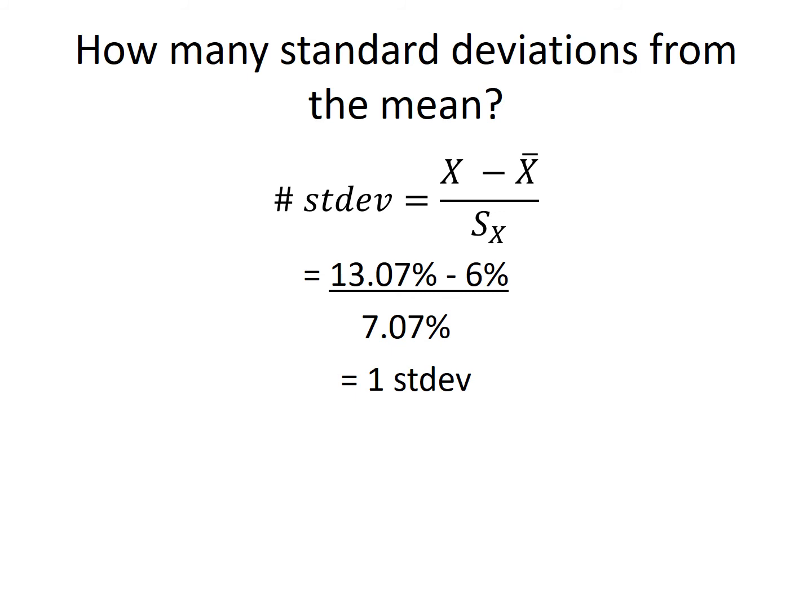Anytime you see a bar over a variable, it denotes the mean or average amount. And in this case, that is 6% as we got from our TI-BA II Plus. And we're going to divide that difference by the sample standard deviation.